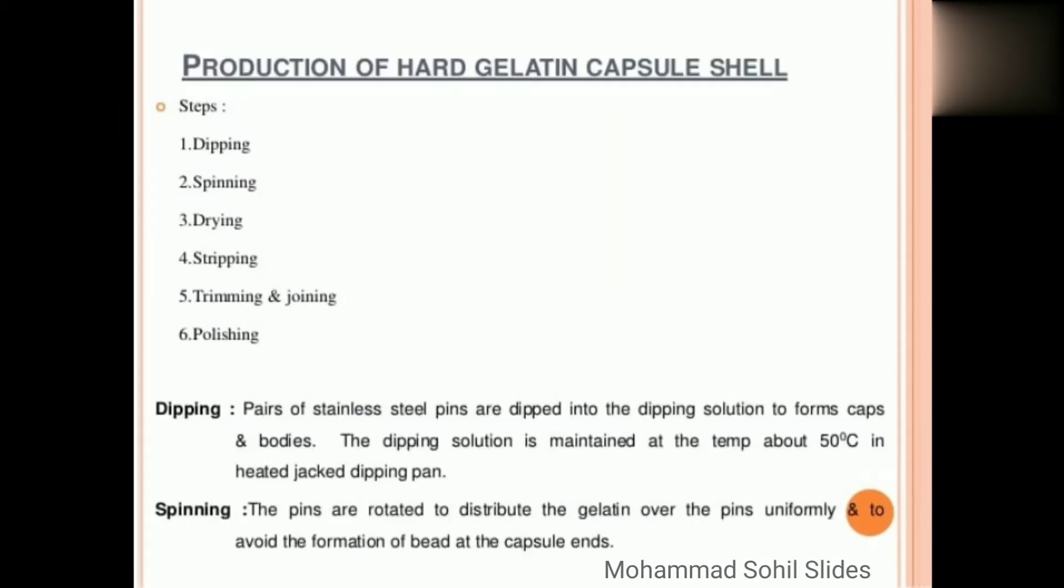Now what are the steps required for the production of hard gelatin capsule shell? First dipping, second spinning, third drying, fourth stripping, fifth trimming and joining, and last polishing.